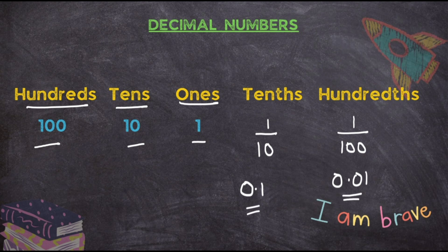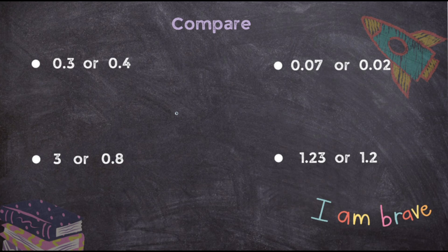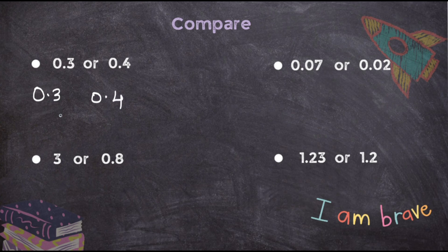Now I will take one part of decimals where you will be required to compare two given decimal numbers. It's a very simple topic. Always remember: in decimals, whenever you are given any number, first find the decimal points. Here is one point and here is another point. Now check who is to the left of it — here it is 0 and here it is 0, so they are the same. Then comes the point, again both are same. Now comes 3 and 4 — tell me, from 3 and 4, who is bigger?